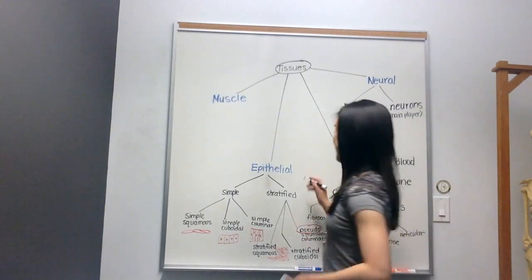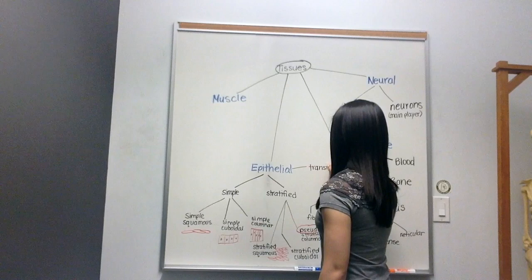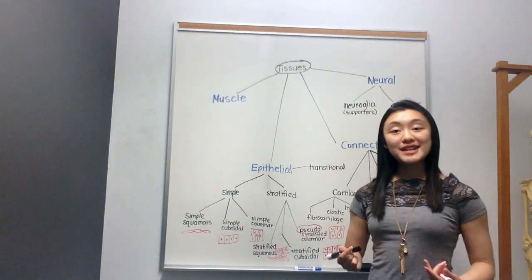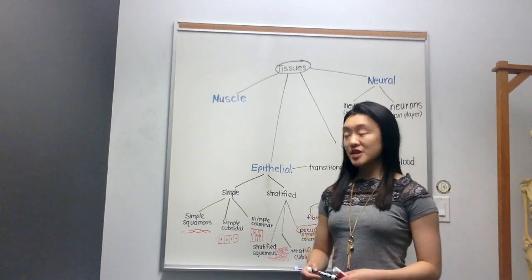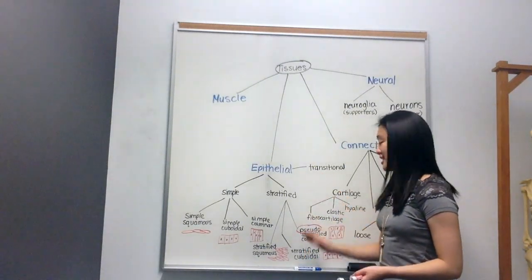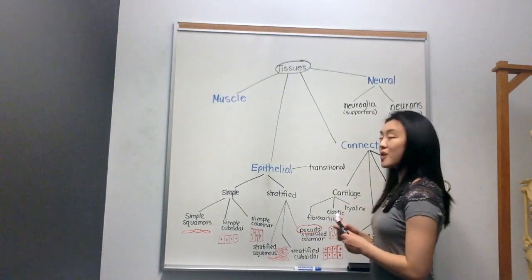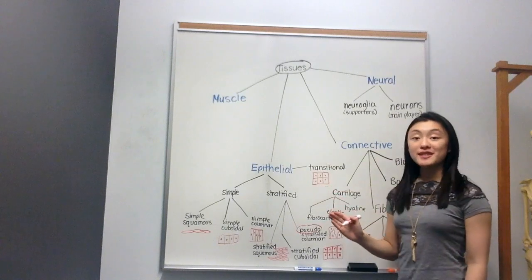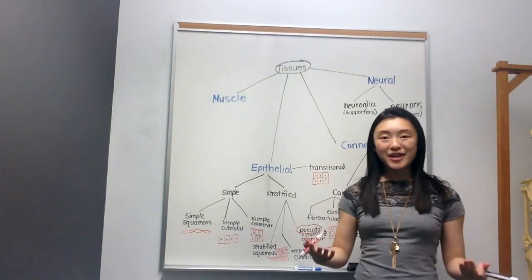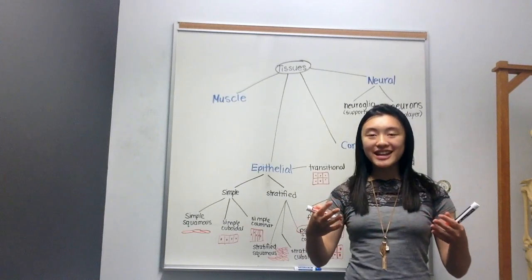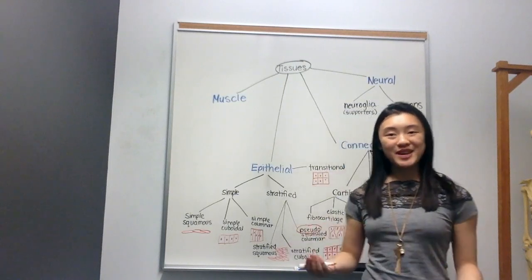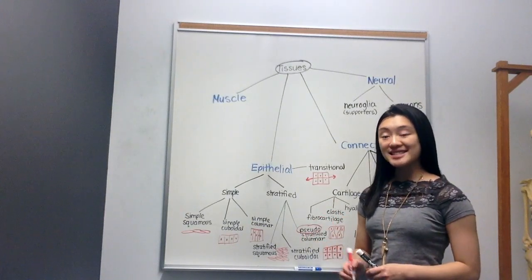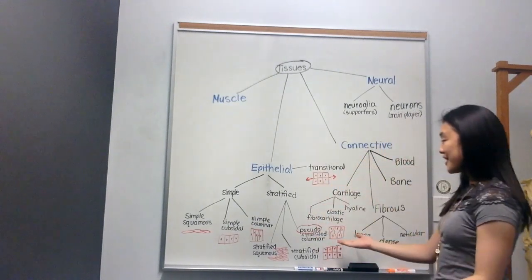Simple and stratified tell you the number of layers; squamous, cuboidal, and columnar tell you the shape. There is one more type: transitional epithelial tissue. It is found in few places — the bladder, urethra, and ureters. It looks like stratified cuboidal, but it can expand, allowing walls to get thin, and then return to its original thicker shape.